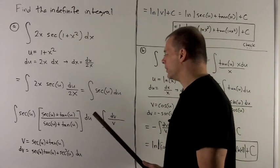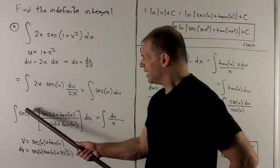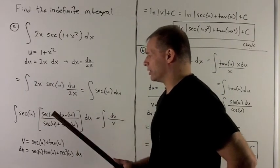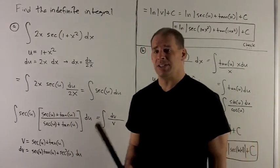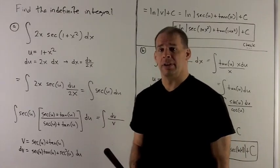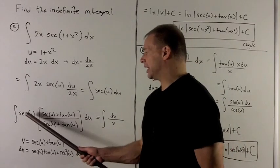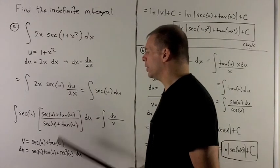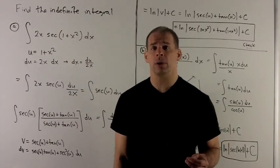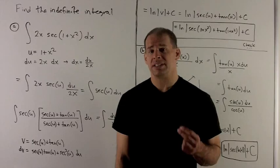Now when I do this, let's see what happens. Sec(u) times sec(u) gives me sec²(u). Sec²(u) is the derivative of tan(u). Sec(u) times tan(u) gives me sec(u)tan(u), which is the derivative of sec(u).